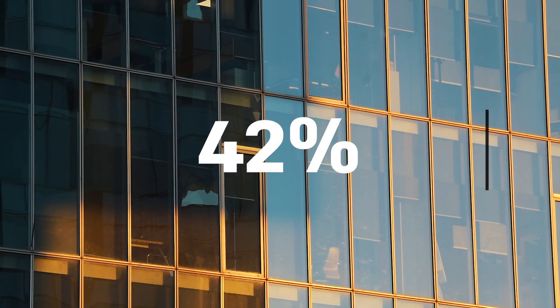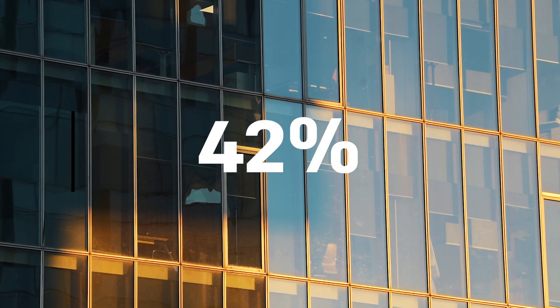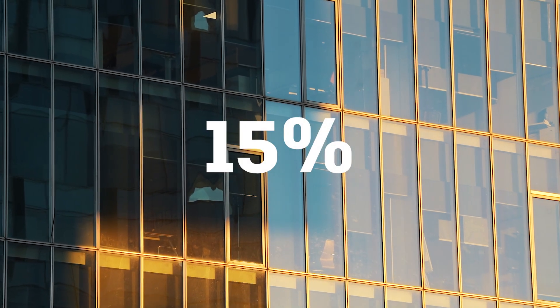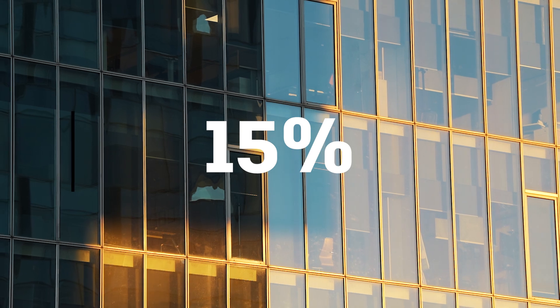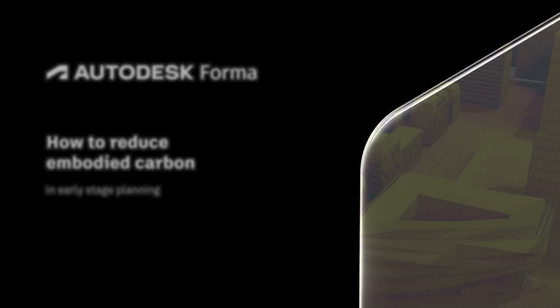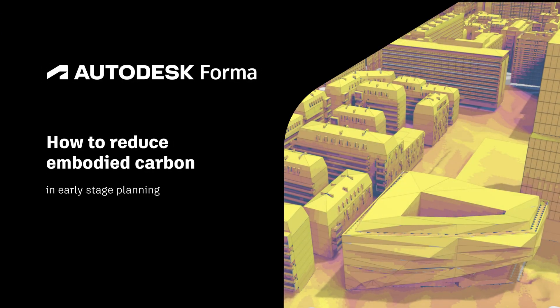42% of the global carbon emissions comes from the AEC industry: 15% from embodied carbon in our buildings — that's the upfront carbon investment we take by building our cities in stone, concrete, steel or wood — and 27% from the operational carbon cost of keeping our cities running.